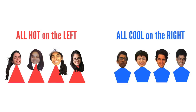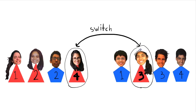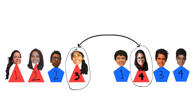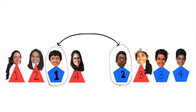Let's look at these macro states more closely. All of my friends don't know each other yet, so all the hot ones stand on the left and all the cool ones stand on the right. There's only one way to achieve this macro state, because if any of them switch places it won't be all hot on one side and all cold on the other. But say they decide to be social — if the macro state changes to three hot friends and one cool friend on the left, and three cool friends and one hot friend on the right, hot friend three can switch with hot friend four without changing the macro state. The same is true if cool friend one switches with cool friend two.